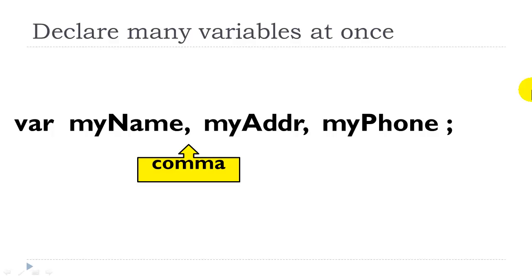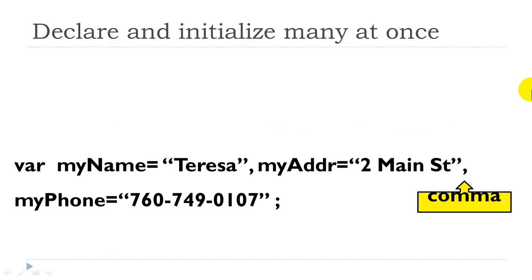You can declare many variables at once and the names of those variables are separated by a comma. You can also declare and initialize many variables at once and here again the name value pairs are separated by commas.